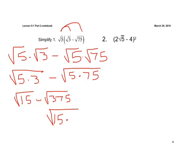If we were to use a calculator, we'd divide 375 by 15 and we would end up with 25. We still have that left side of square root of 15. Now using that multiplication property, we can rewrite the right side as square root of 15 times square root of 25.